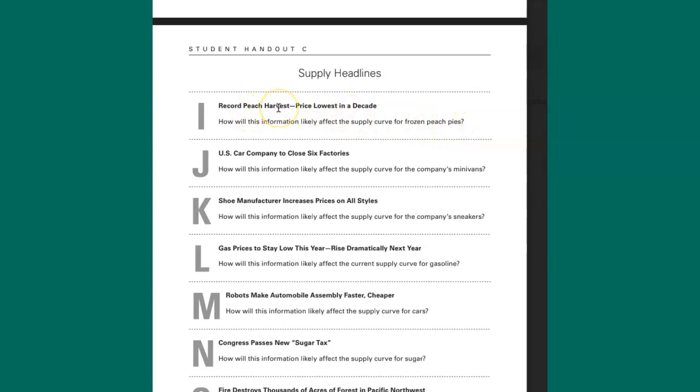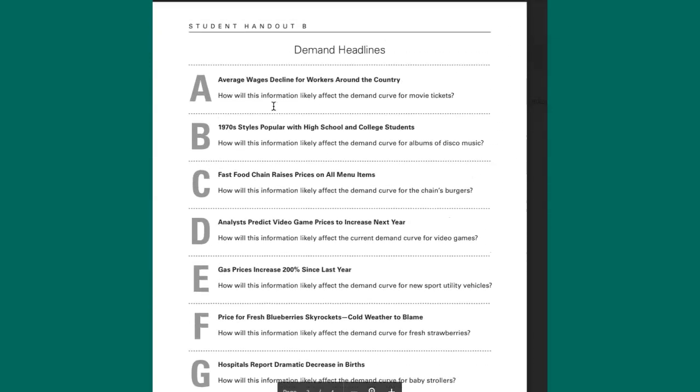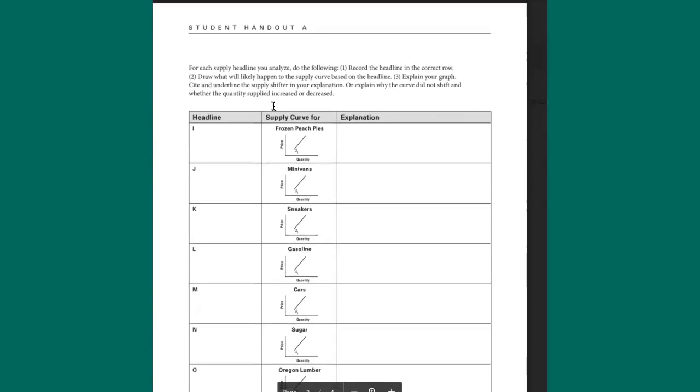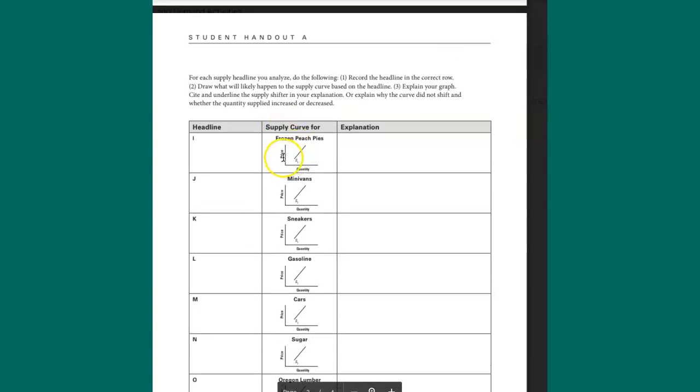So it's a record peach harvest, which means there's a lot of peaches. And the price is lowest in a decade. So how are we going to figure that out? Let's think about it. If the price of peaches is extremely low, then what can we do with the amount of peach pies that we're going to supply to the market if we were baking peach pies?